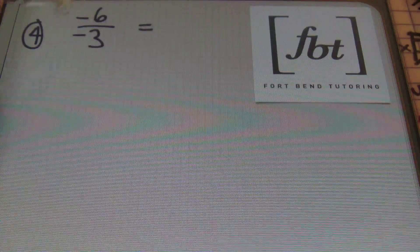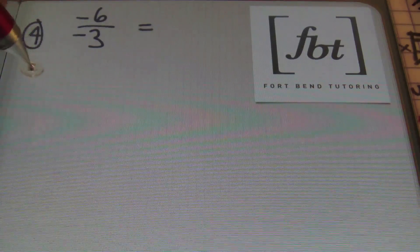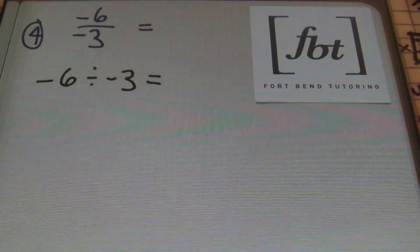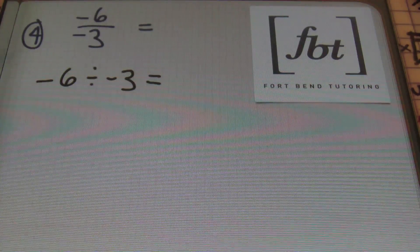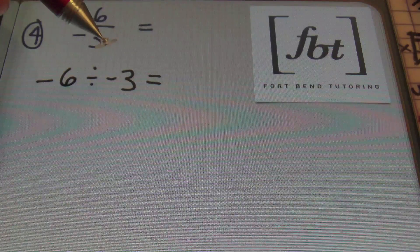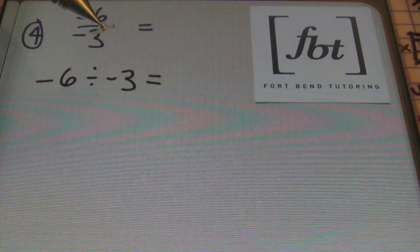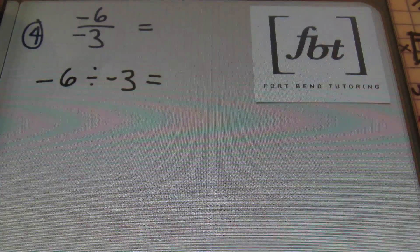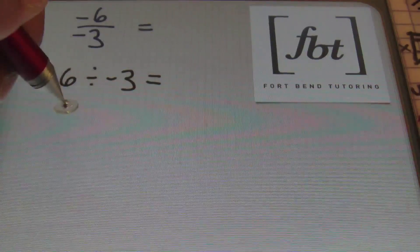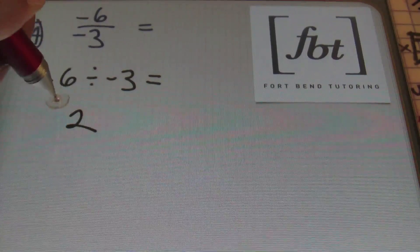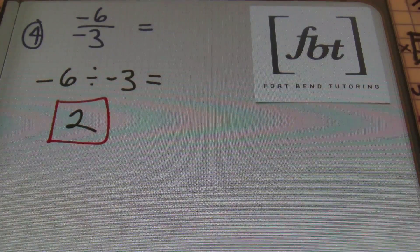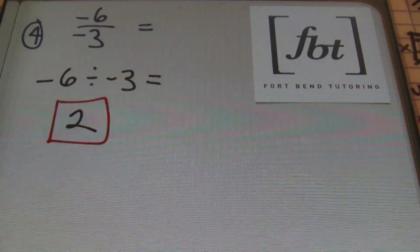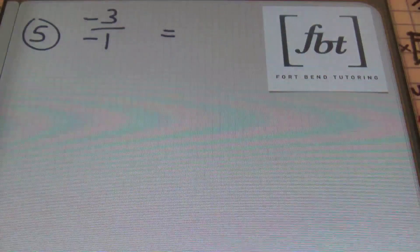In problem number four, we have negative six divided by negative three. You can rewrite this as negative six divided by negative three — that's the equivalent expression. A negative divided by a negative is a positive. An even number of negative signs will always give you a positive result. Then divide six by three and you get two, a positive two, as your result. So negative six divided by negative three equals positive two.